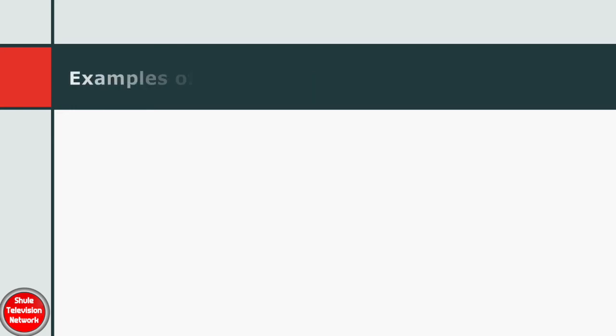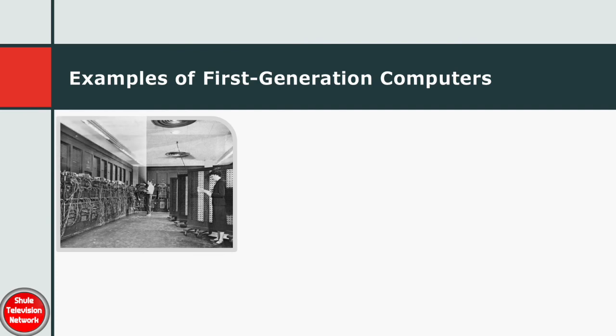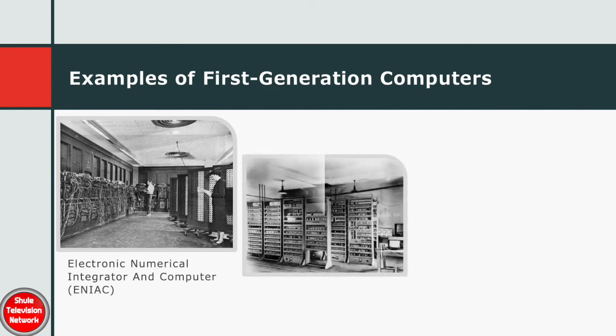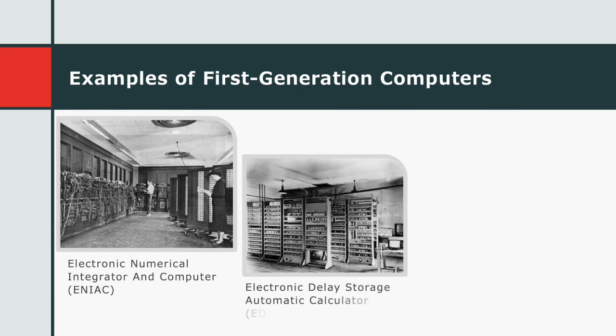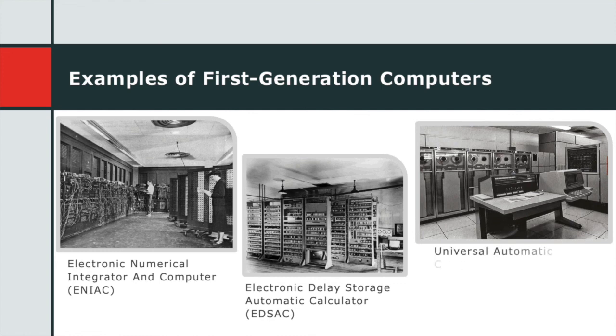Examples of first generation computers are shown in these pictures: the Electronic Numerical Integrator and Computer, which was known as ENIAC in short; the Electronic Delay Storage Automatic Calculator, which was known as EDSAC in short; and the Universal Automatic Computer, which was known as UNIVAC in short.